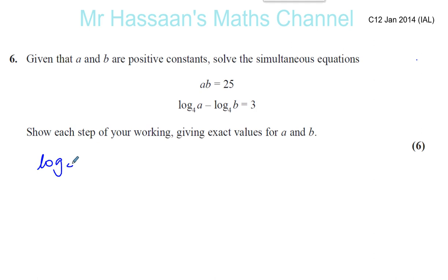We've got log to the base 4 of A minus log to the base 4 of B is equal to 3. Now, when you have two logs that are subtracted from each other to the same base, we can use the law of division. We can write this as log to the base 4 of A divided by B, and that's equal to 3.